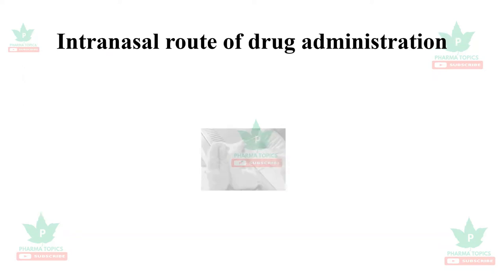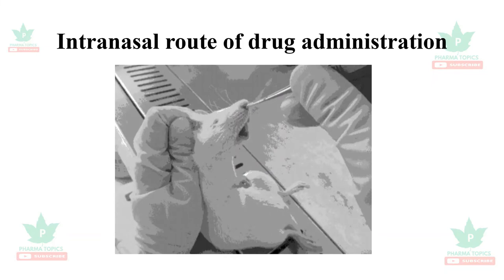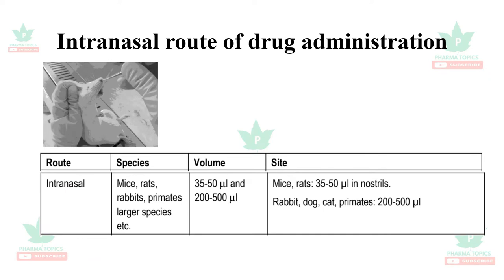The intranasal route of drug administration is less preferable and rarely used. The volume administered is very small — 35 to 50 microliters in mice and rats — administered into the nostrils. In case of rabbits, dogs, cats, and primates, the volume is 200 to 500 microliters in the nostrils.